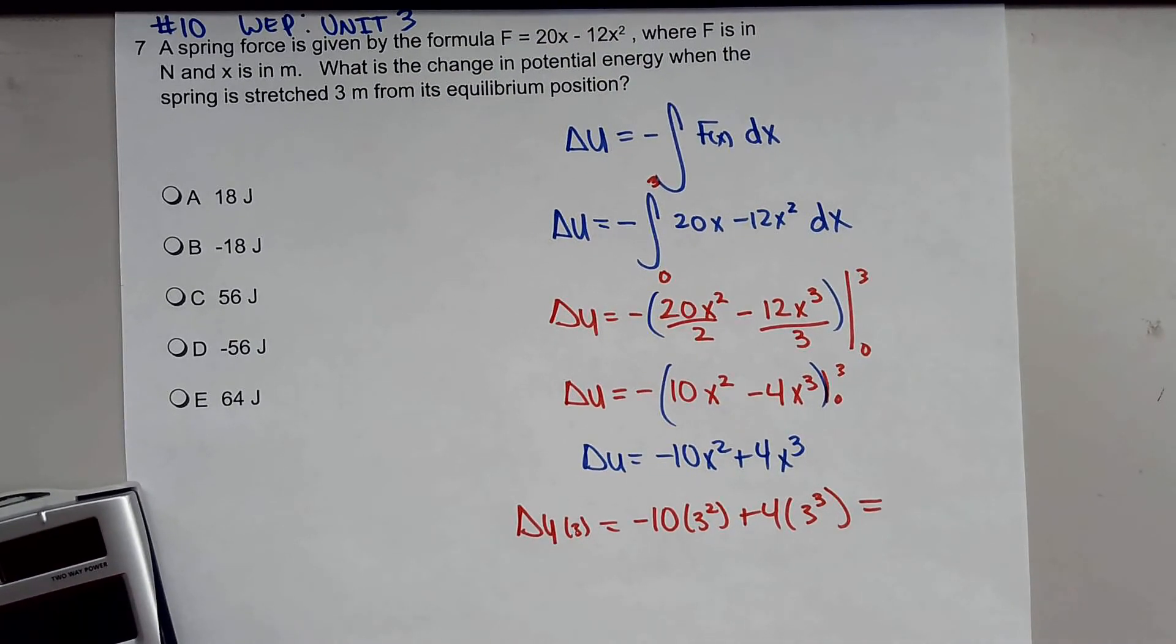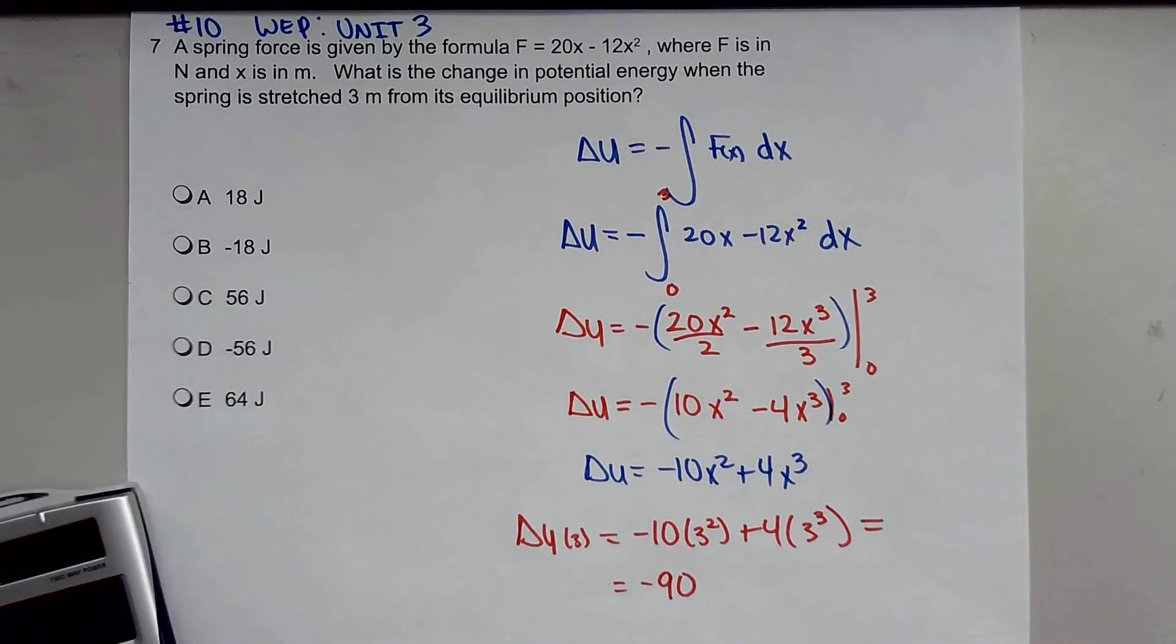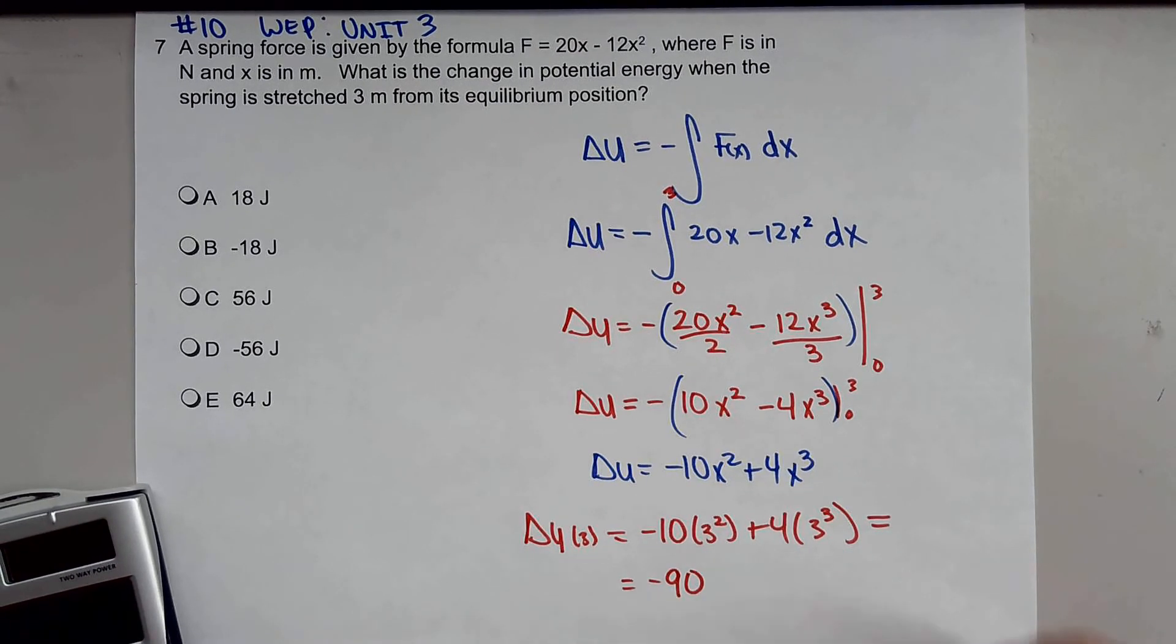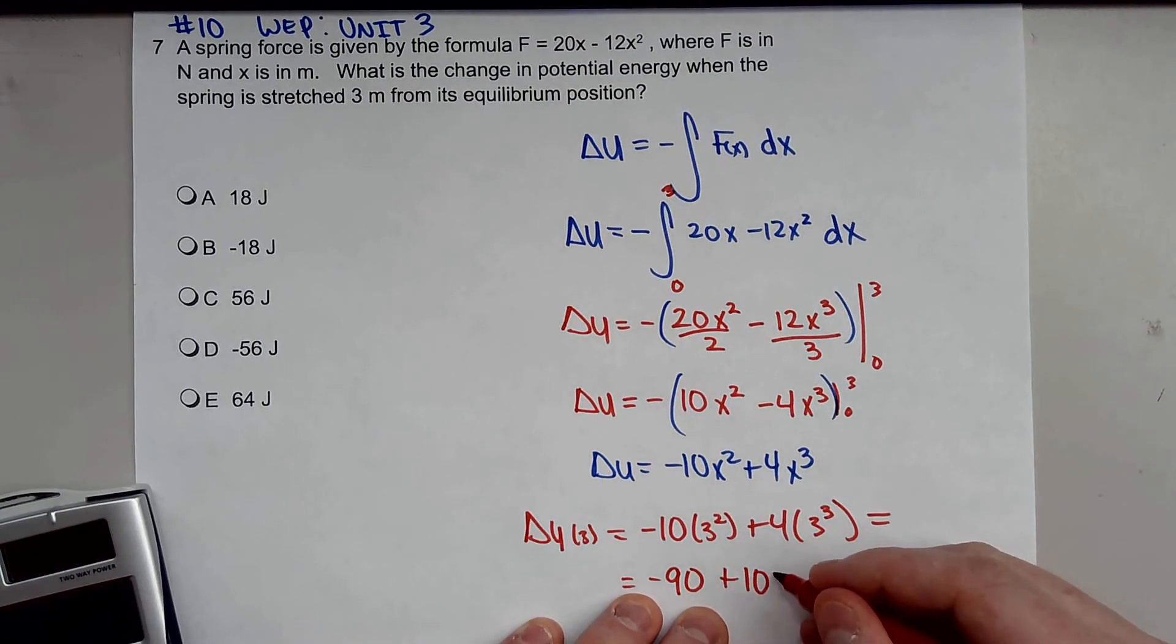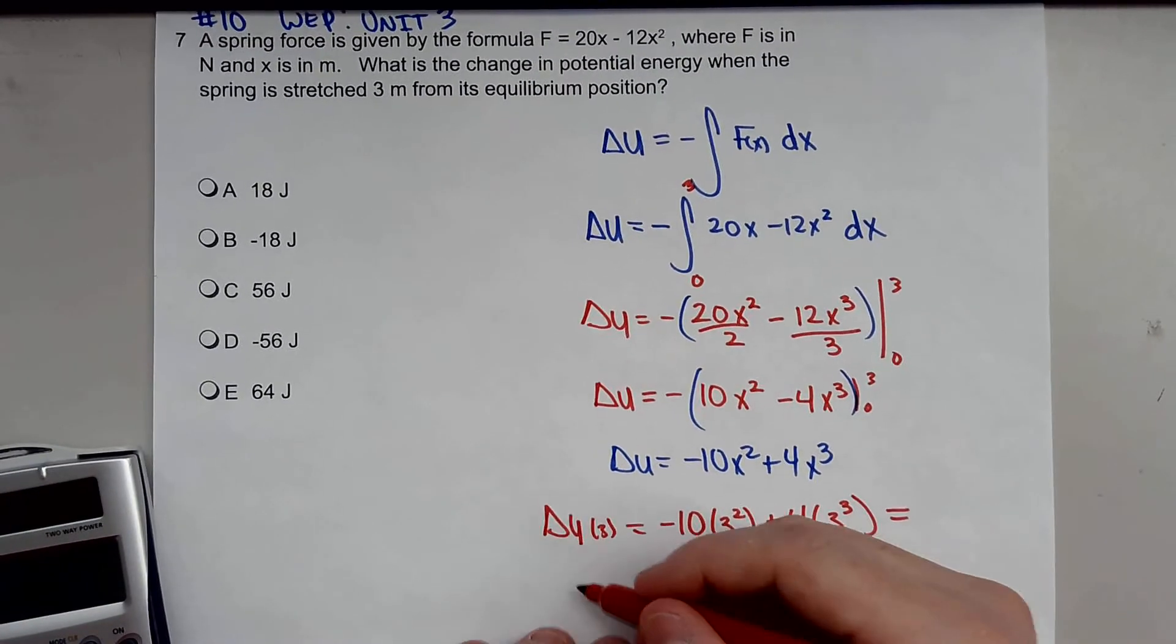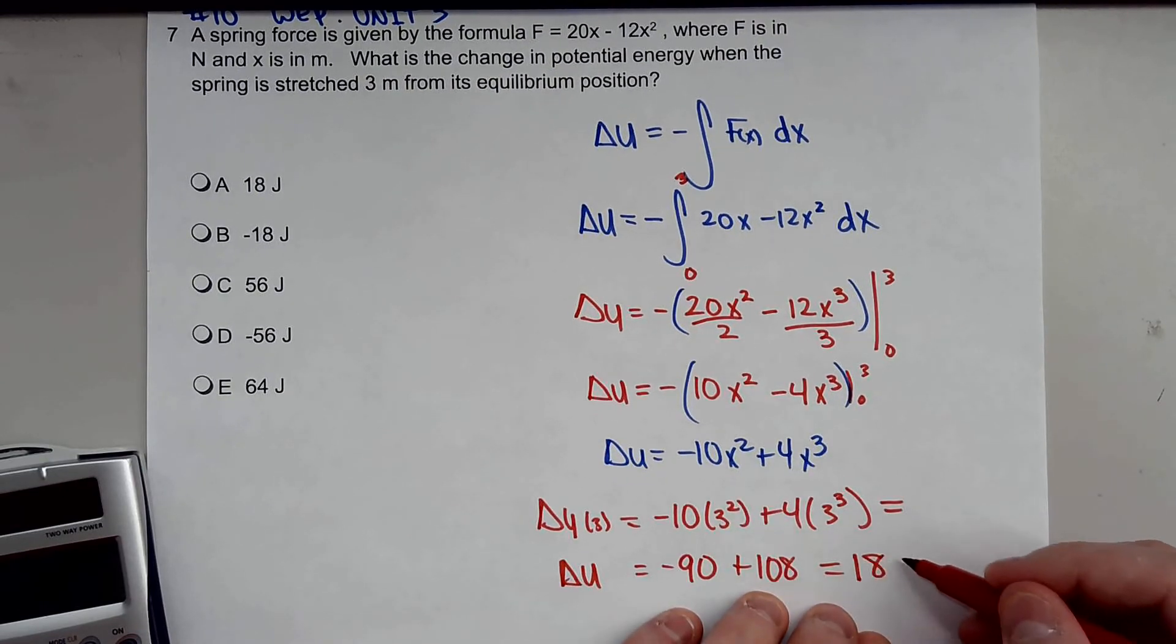Let's go ahead and plug that in there. This is negative 90. 3 cubed is 27 times 4, which is plus 108. If you do these together, the change in potential energy would be equal to 18 joules.